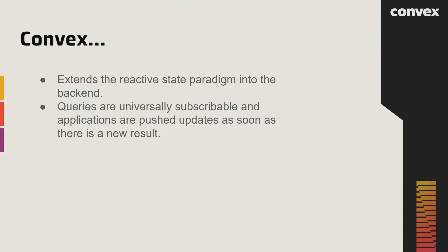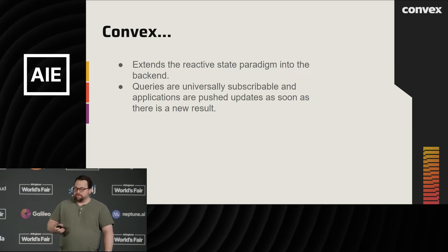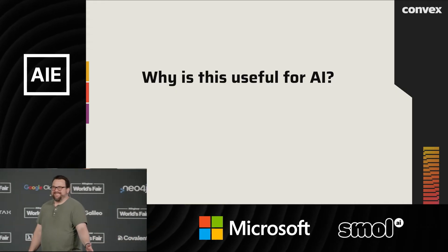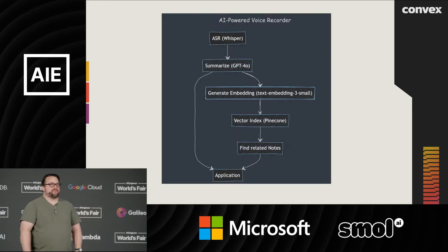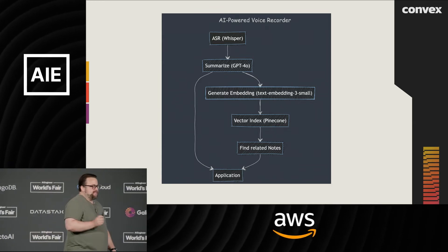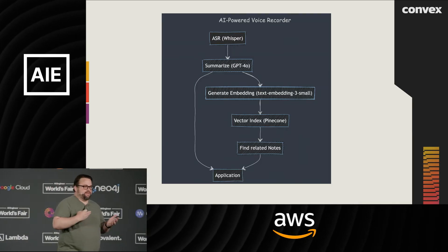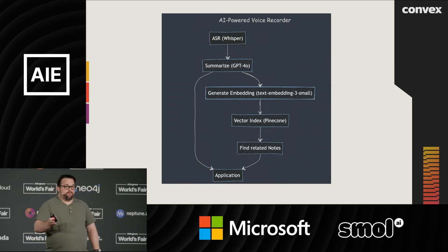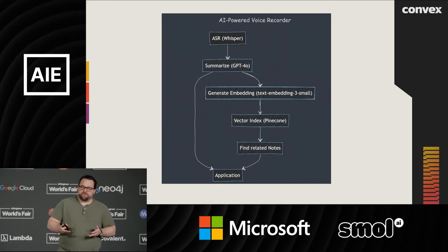Queries are universally subscribable entities that applications can get updates from as soon as updates are available. What this has to do with AI is that some of the reacting entities are actually server-side actions, not just the application. Something like a note taker — you might do automatic speech recognition, then summarize it, generate embeddings, find related notes. Along the way, at different checkpoints, the application needs to be brought in to show the summary, show related notes, et cetera.